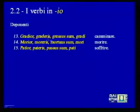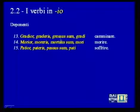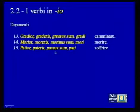The deponent '-io' verbs are: 'gradior, graderis, gressus sum, gradi' meaning 'to walk', with many compounds such as 'egredior' (to exit) and 'ingredior' (to enter); 'morior, moreris, mortuus sum, mori' with future participle 'moriturus', discussed in a recent lesson; and 'patior, pateris, passus sum, pati' meaning 'to suffer' — from which the Greek 'pathos', the Passion of Jesus Christ, and all nouns derived from this same stem.